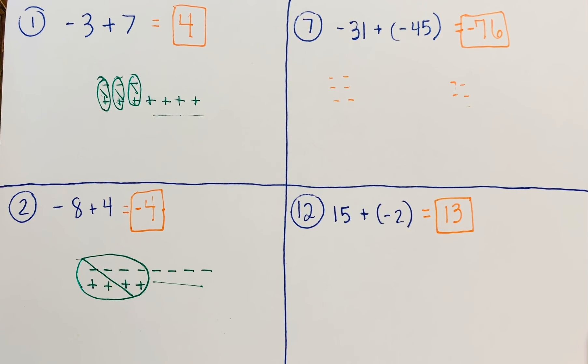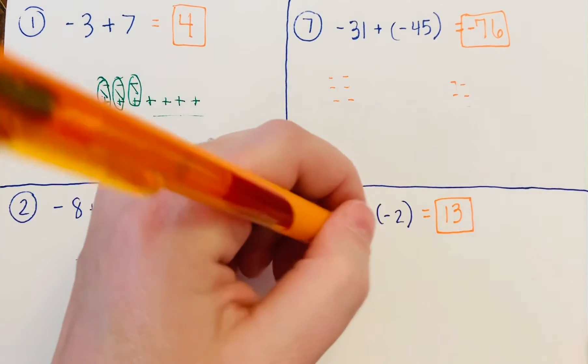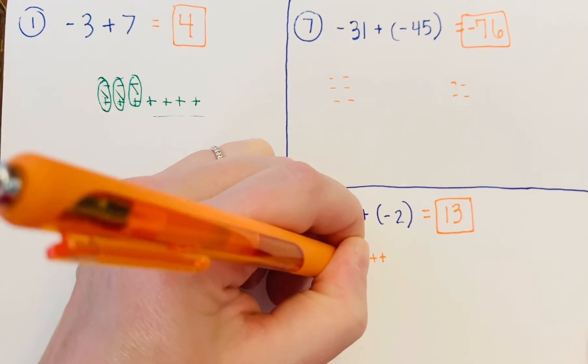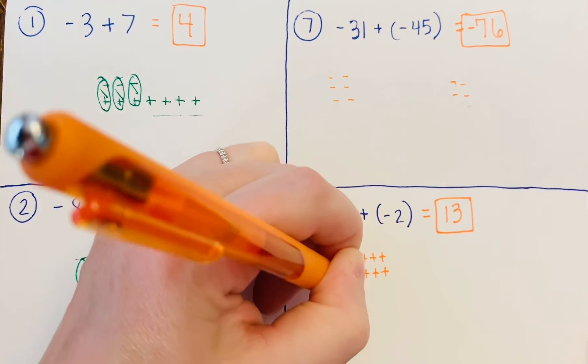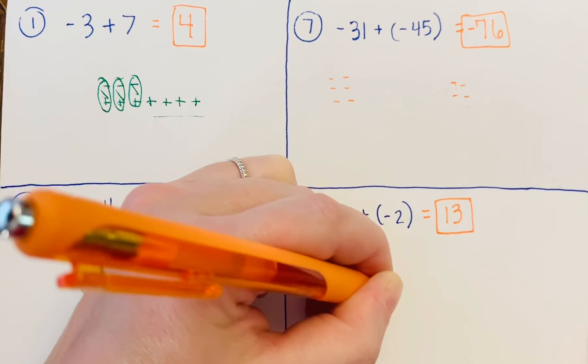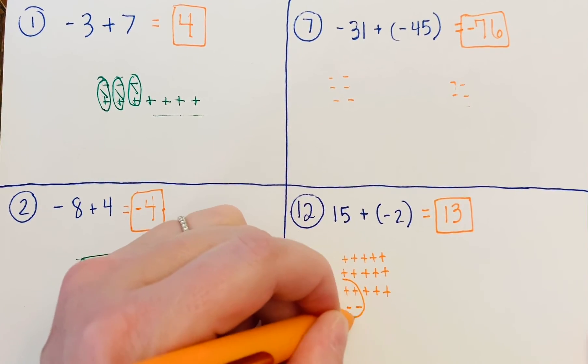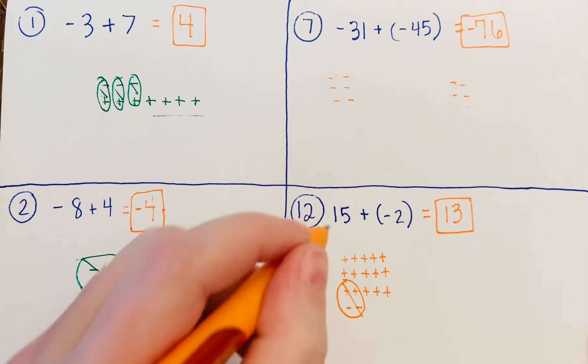If it's helpful, you could draw out 15 positives—even though that's kind of a lot, it's not that bad—and two negatives. Get rid of those zero pairs.